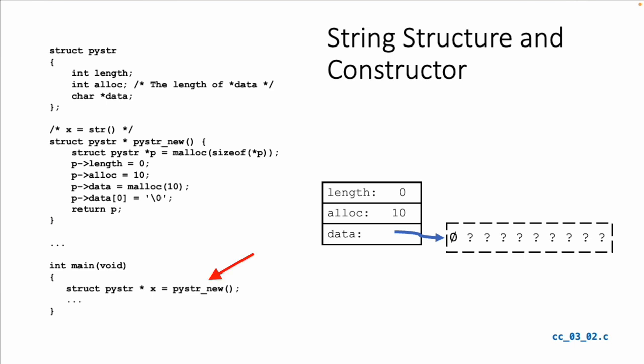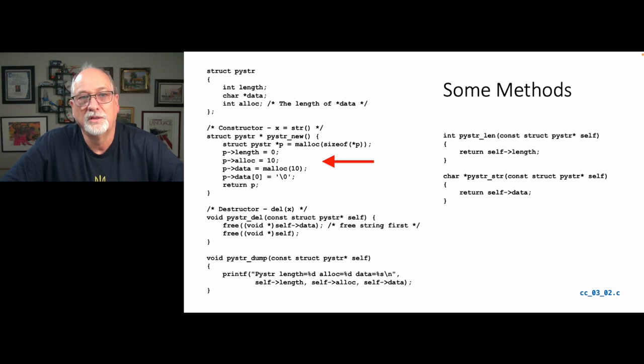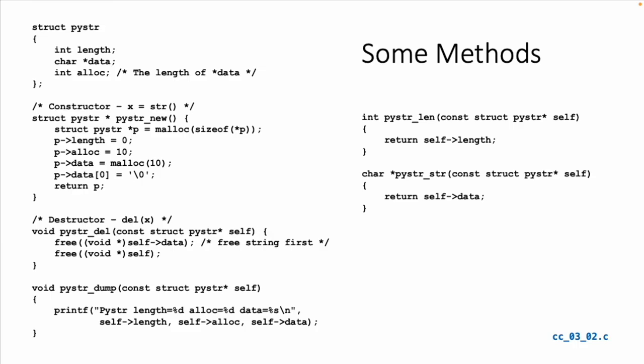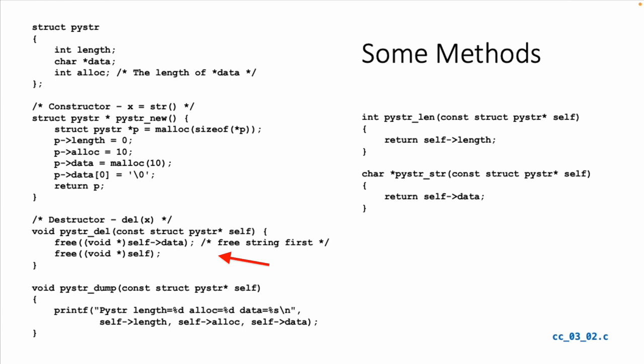This gets called in main as struct PyStr star X equals PyStr new. When we're done, we get back two pieces of dynamically allocated data, all ready to use. We've got the struct, the constructor, and the destructor, which is PyStr del. That passes in self. Now we call free. There are two allocated things: the data, which is the character array, and the object itself. At the end of del we've given back all the data we alloc'd.